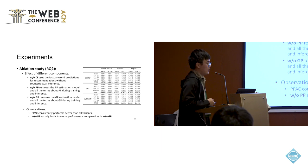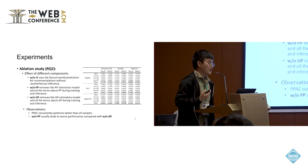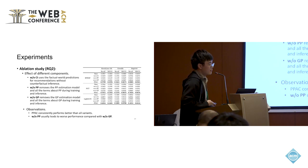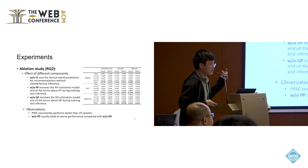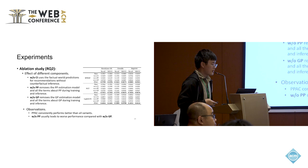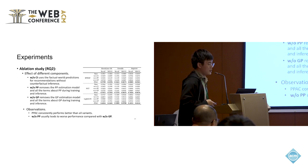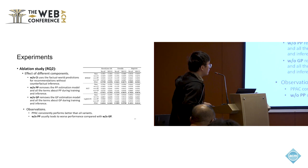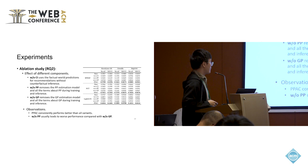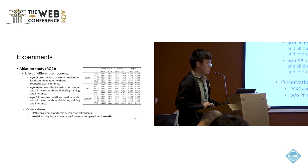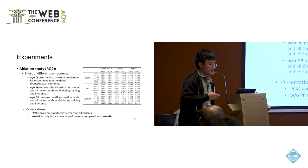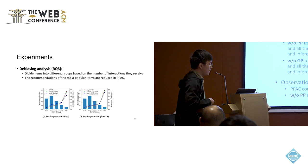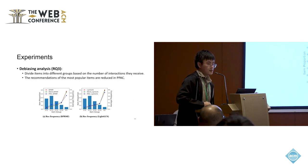For the ablation study, we design three PPAC variants: without CI (counterfactual inference, i.e., gamma and beta set to zero), without PP (removing the PP component), and without GP (removing the GP component). We find that PPAC consistently outperforms all variants, and that removing PP usually leads to worse performance than removing GP, demonstrating that our proposed PP is more effective than GP.